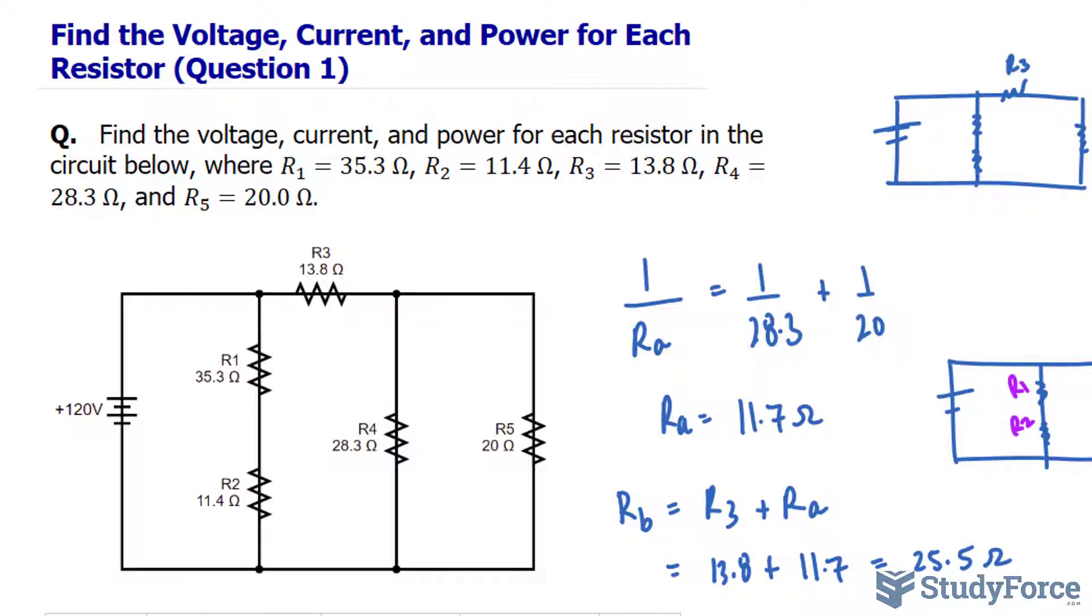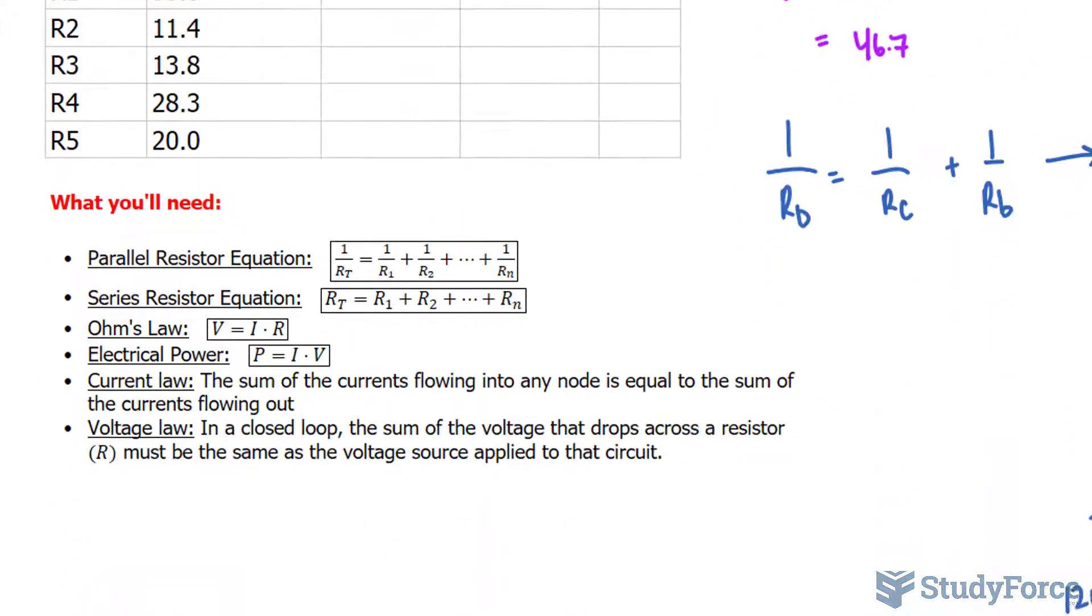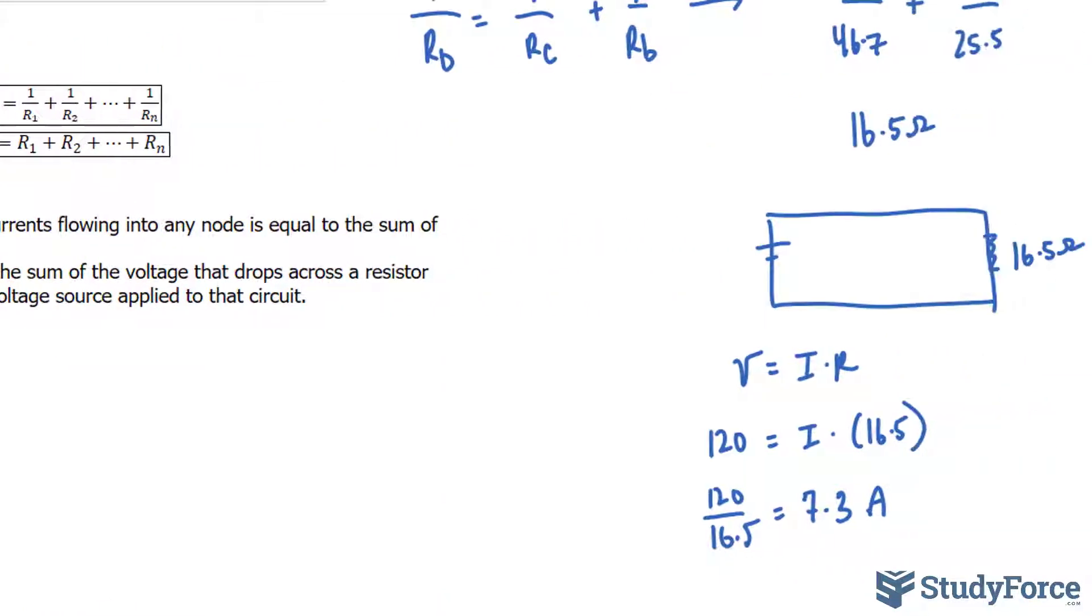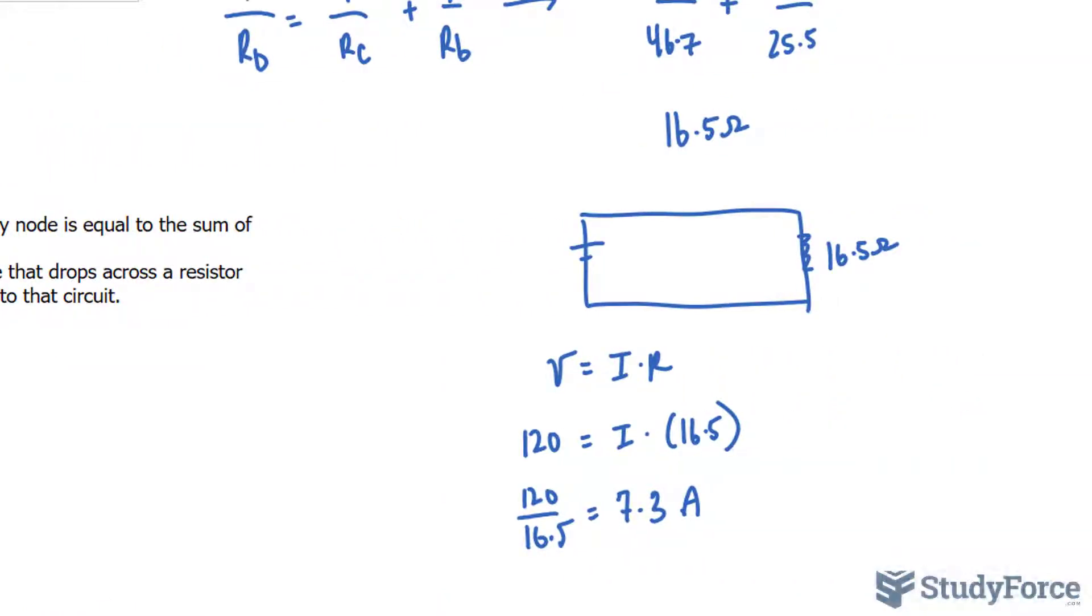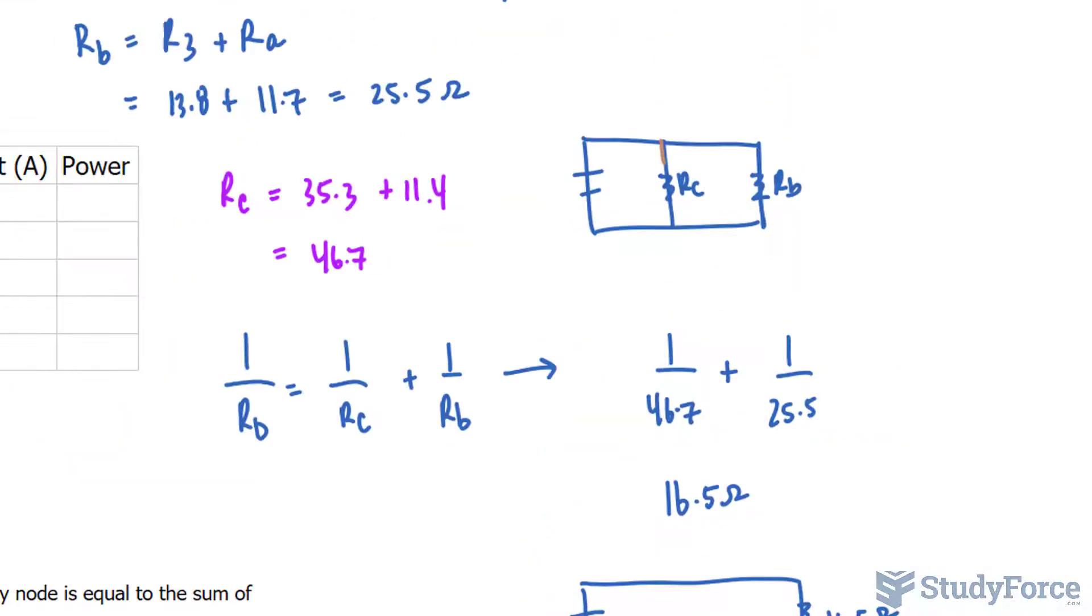In part one we ended off combining these resistors so that it was represented as one resistor and the power source of 120 volts. The circuit ended up looking like this and we calculated the resistance of this resistor and also found the current, which was 7.3 amperes.